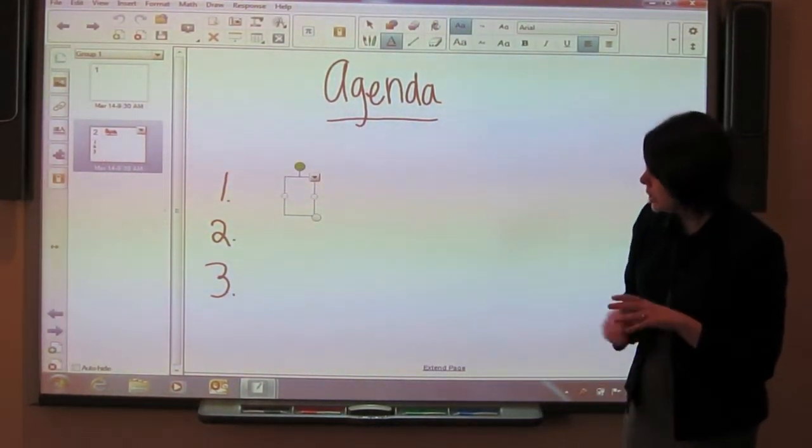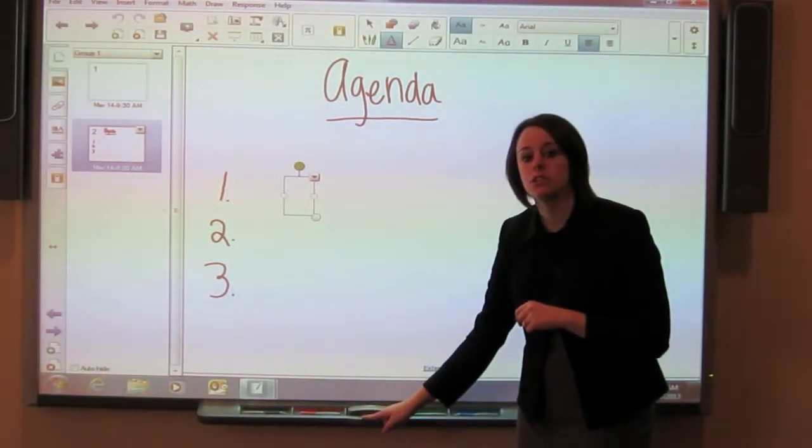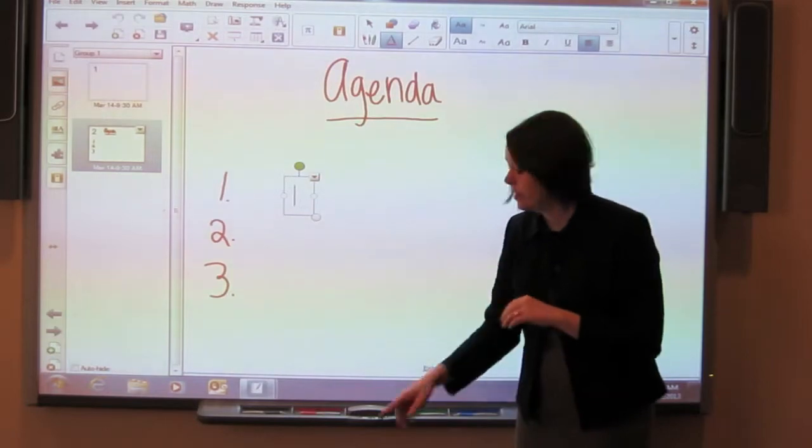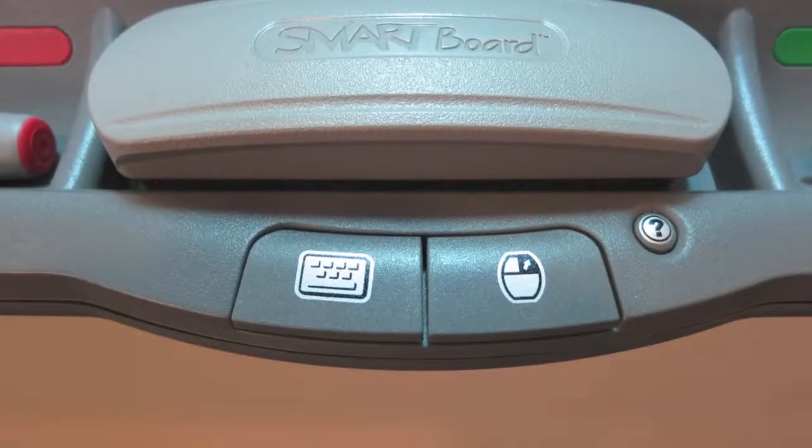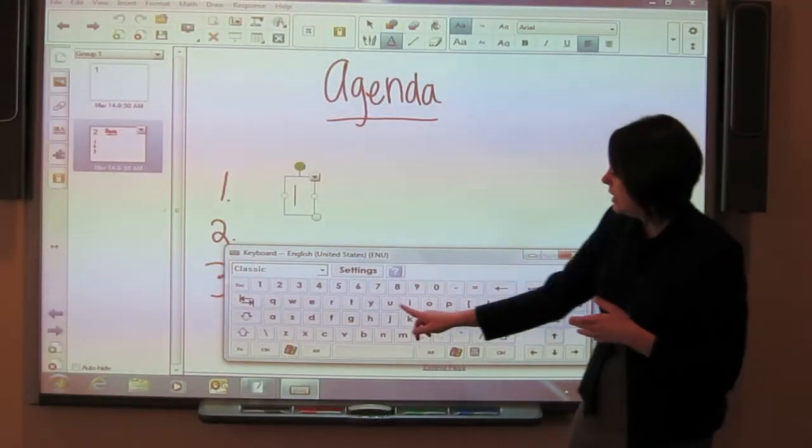Or on the left side of the tray where the eraser is, there's a button that looks like a keyboard. If I touch on that, it'll bring up an on-screen keyboard and I can use that to then type on the screen.